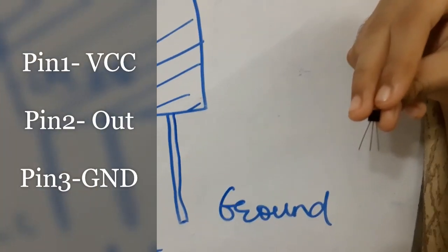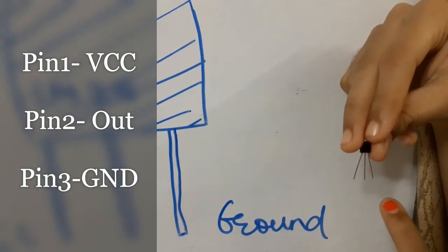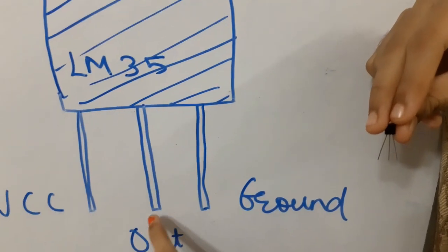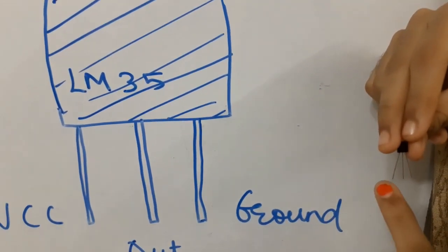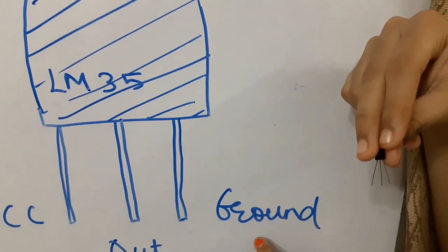When you hold the sensor like this and look at it from the front, you can see three pins. In the center, you have pin out. At the left, it is VCC and right, pin ground.